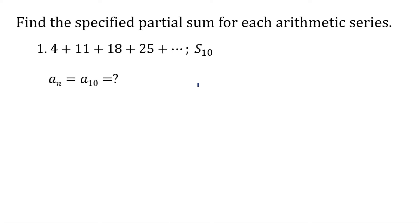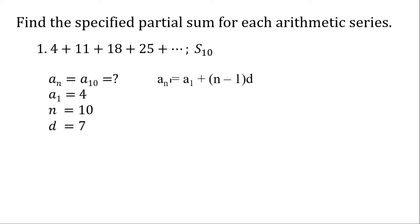For our a sub n, our last term — we don't know our last term because it's not given in the problem. So we need to solve for a sub n and we will use the arithmetic sequence formula. Our a sub 1 is 4, our n is 10, and our common difference is 7.